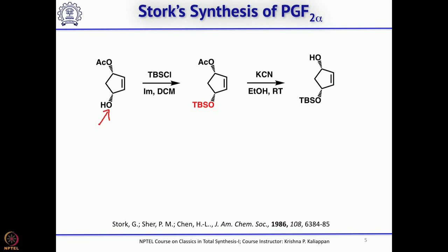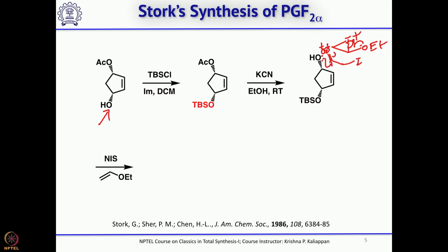The next step is treatment of this allylic alcohol with ethyl vinyl ether in the presence of N-iodosuccinimide (NIS). The iodonium ion forms and opens, giving a species with an OEt group; the lone pair on oxygen attacks and neutralizes the positive charge. So you get the corresponding compound, which is the precursor required for the key 5-exo radical cyclization followed by trapping the resultant radical.